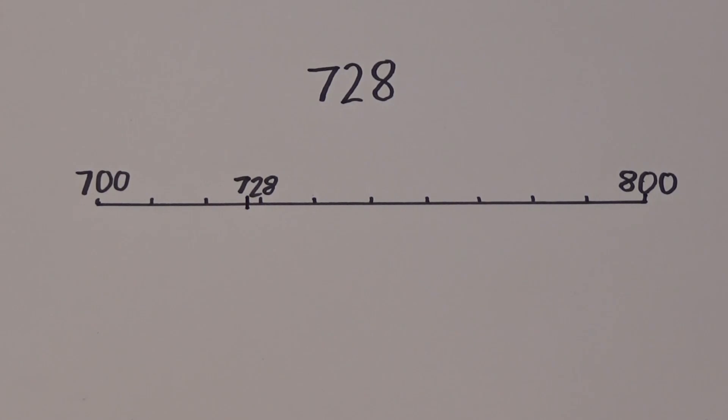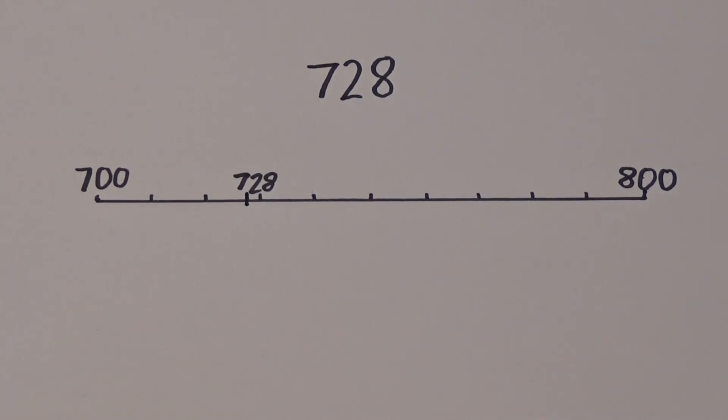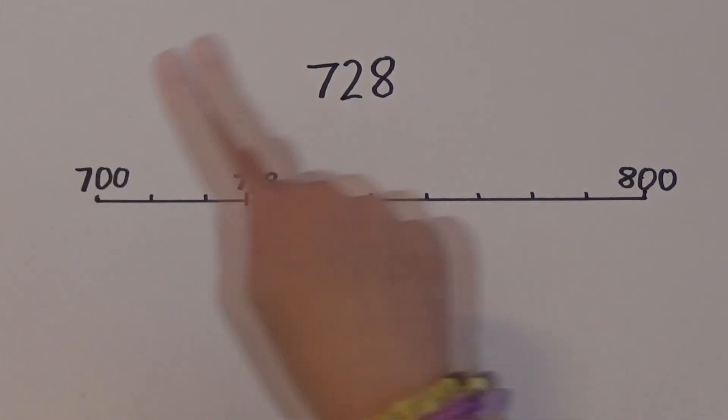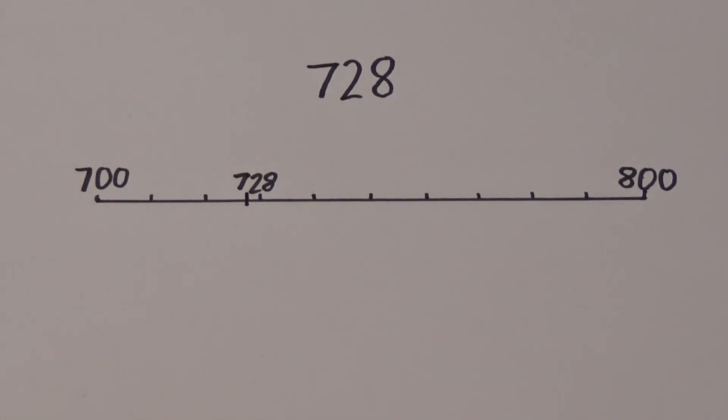This time we're going to look at 728. Again, I've drawn a number line, but this time I've looked at which multiples of 100, 728 falls between. 728 falls between 700 and 800, so I've written 700 and 800 at either end. 728 is just below 730, so I've positioned it here.